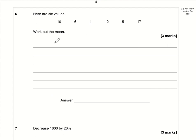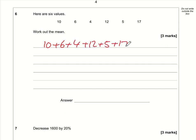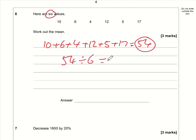Question 6: we need to work out the mean. First find the total: 10 + 6 + 4 + 12 + 5 + 17 = 54. Then divide by the number of values, which is 6. 54 divided by 6 is 9, so the mean is 9.